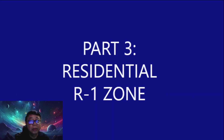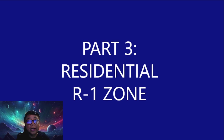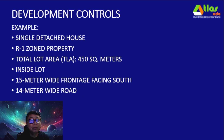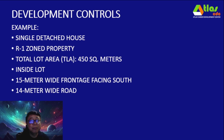This is Part 3. We have a residential R1 zone, and our sample problem today will be a single detached house in an R1 zone property. Our total lot area here is quite big — we have 450 square meters. It is an inside lot with a 15-meter wide frontage facing south to a 14-meter wide road.